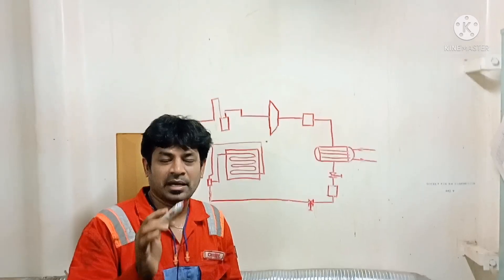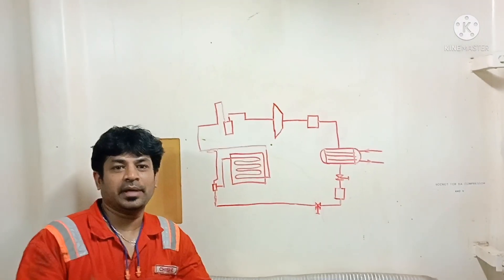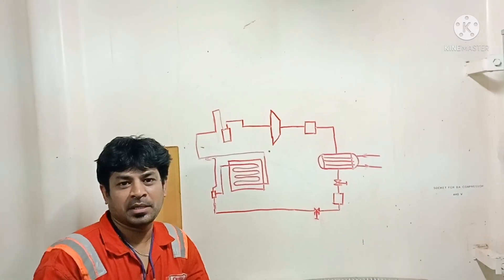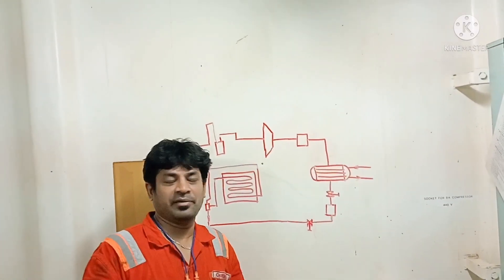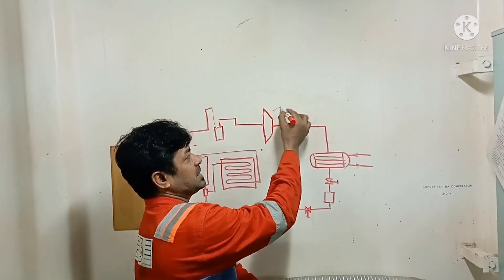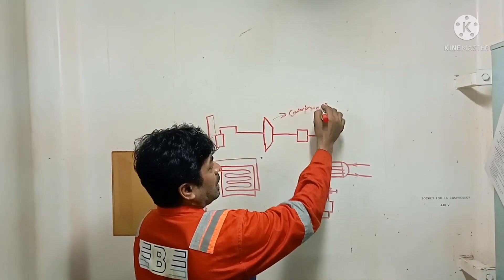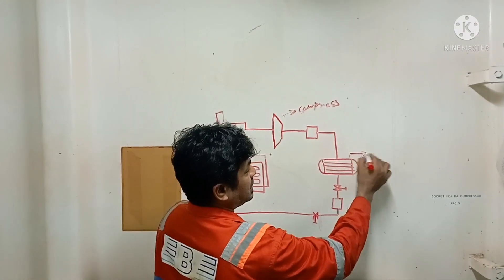To understand this Provision Refer compressor working, we need to know what are all the components that are involved. The main components for this Provision Refer compressor are: one will be your compressor, and this is your condenser.